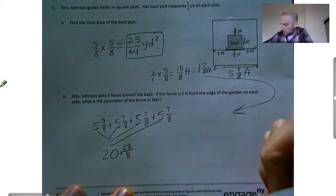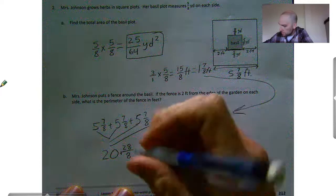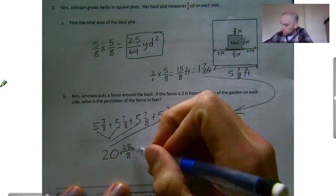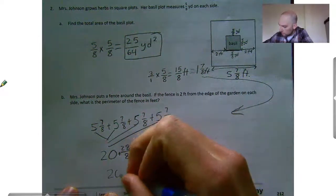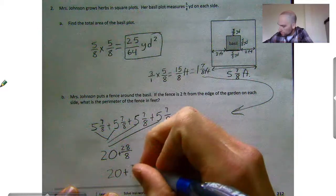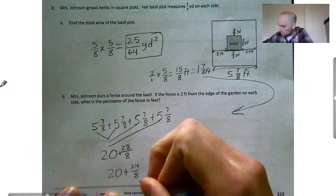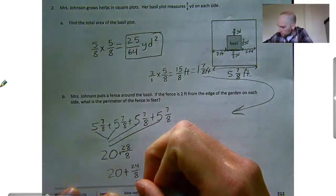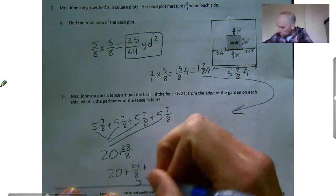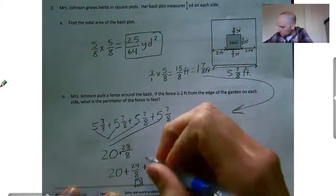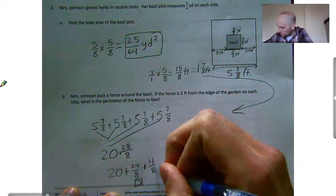And 28-eighths. Well, eight goes into 28 three times. It should be 24-eighths. So I'll have 20 plus 24-eighths, which is really three, plus another four-eighths. And four-eighths is really one-half.